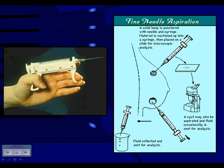A little bit about FNAs in general. You need to have some familiarity with the FNA procedure. This is the MRAD device that feeds at 10cc. You can use FNA to sample either solid or cystic lesions of the breast. You've already had some exposure to how to prepare these specimens, and hopefully we've all had a chance to go out on some FNA procedures.